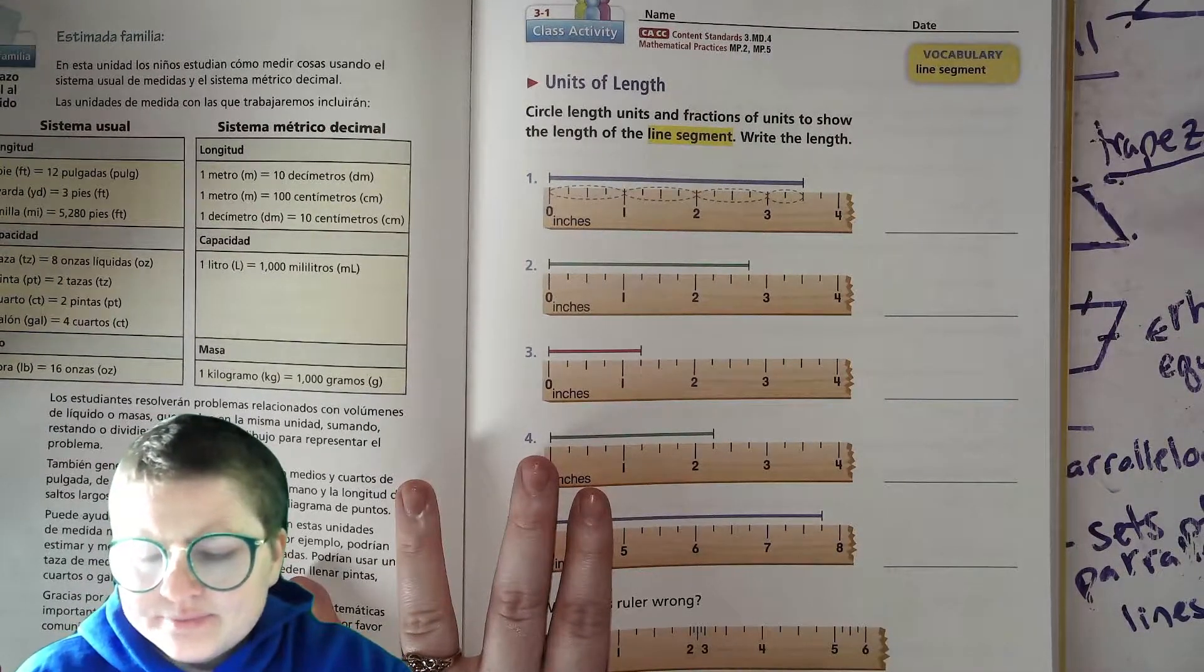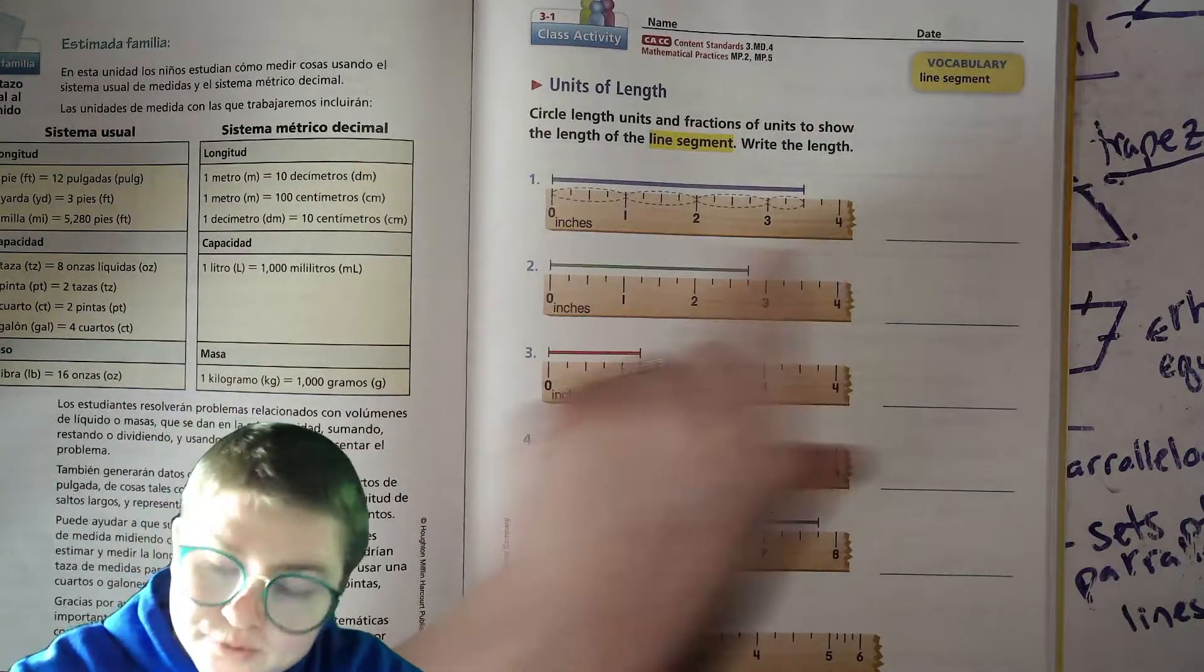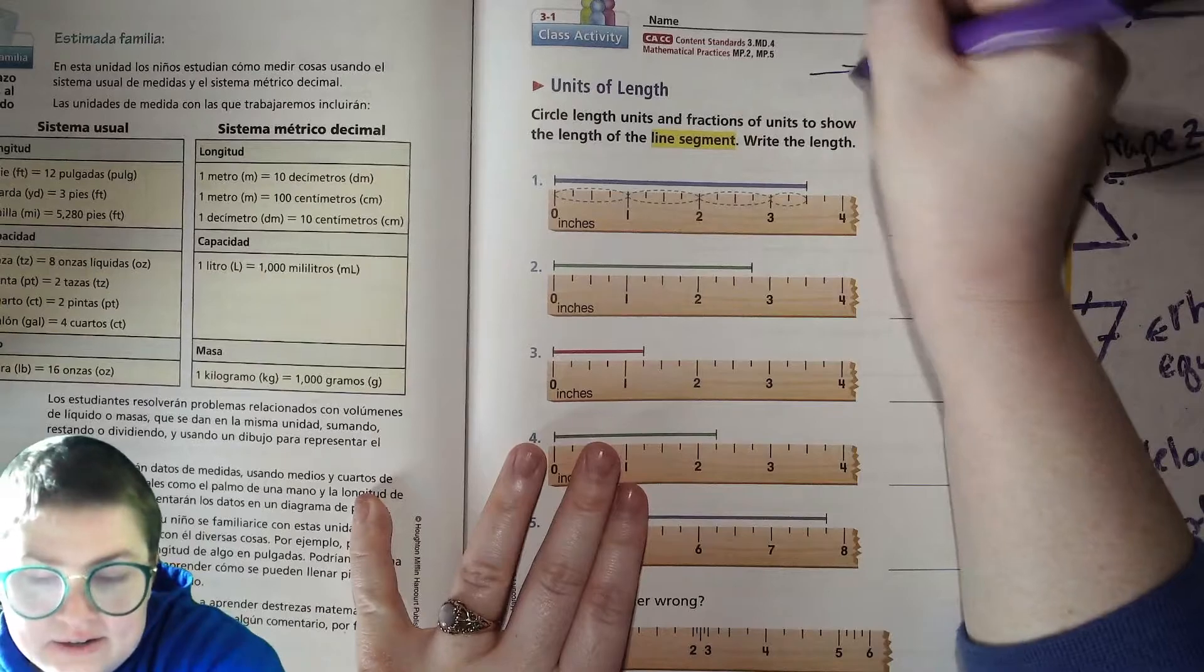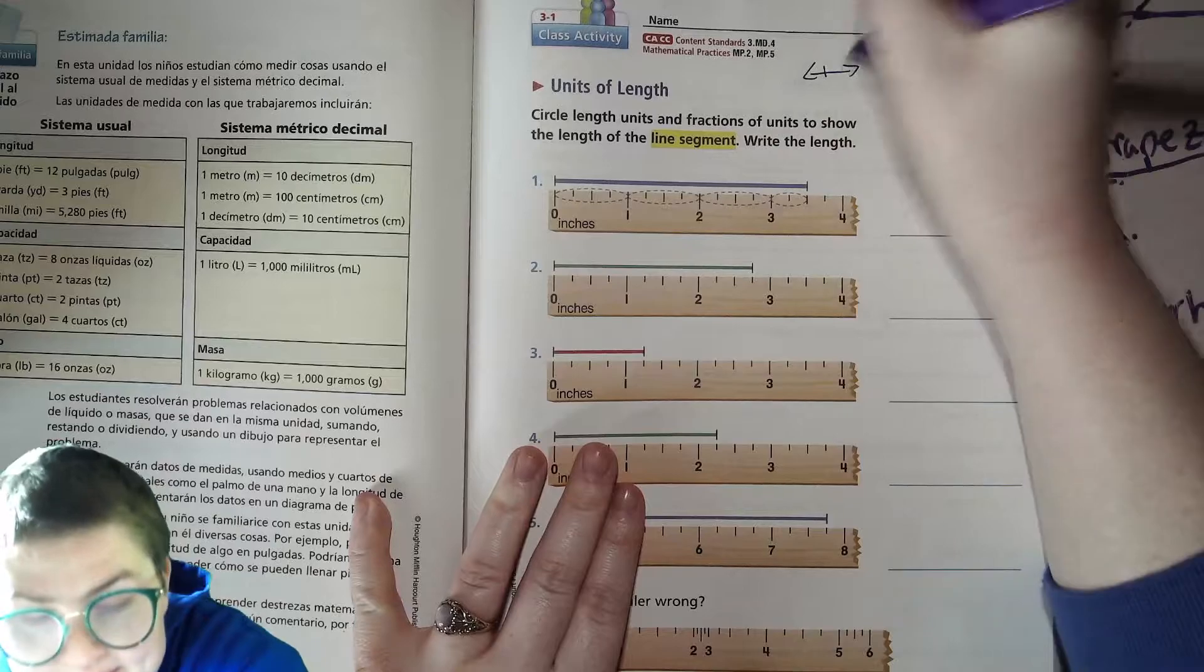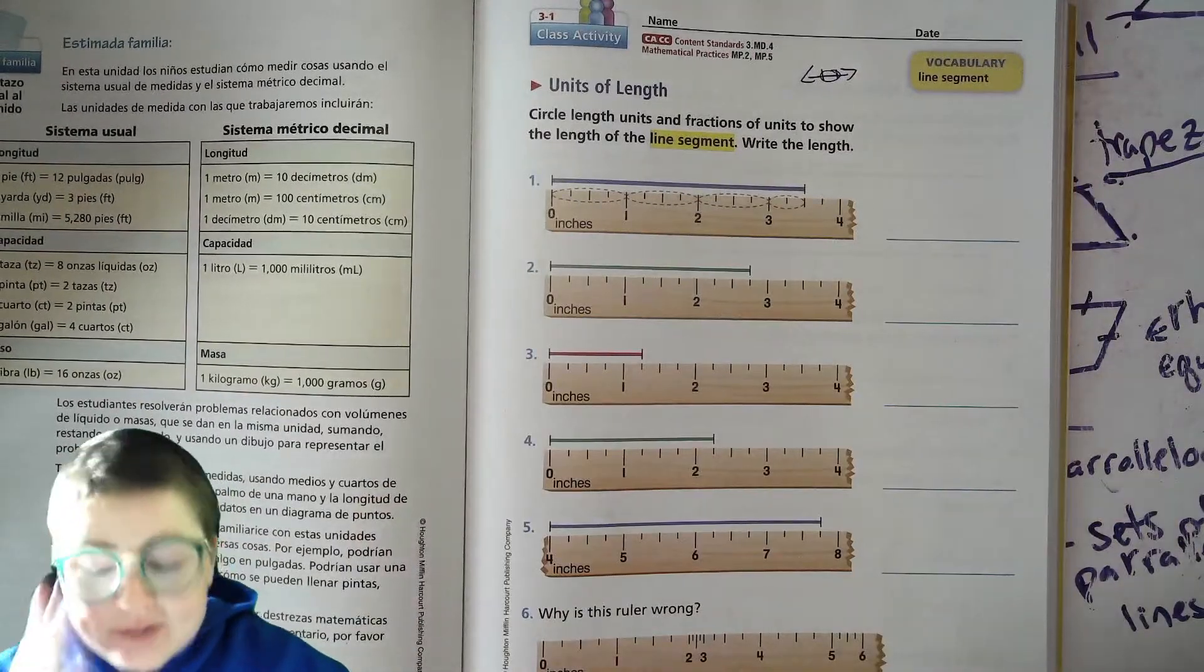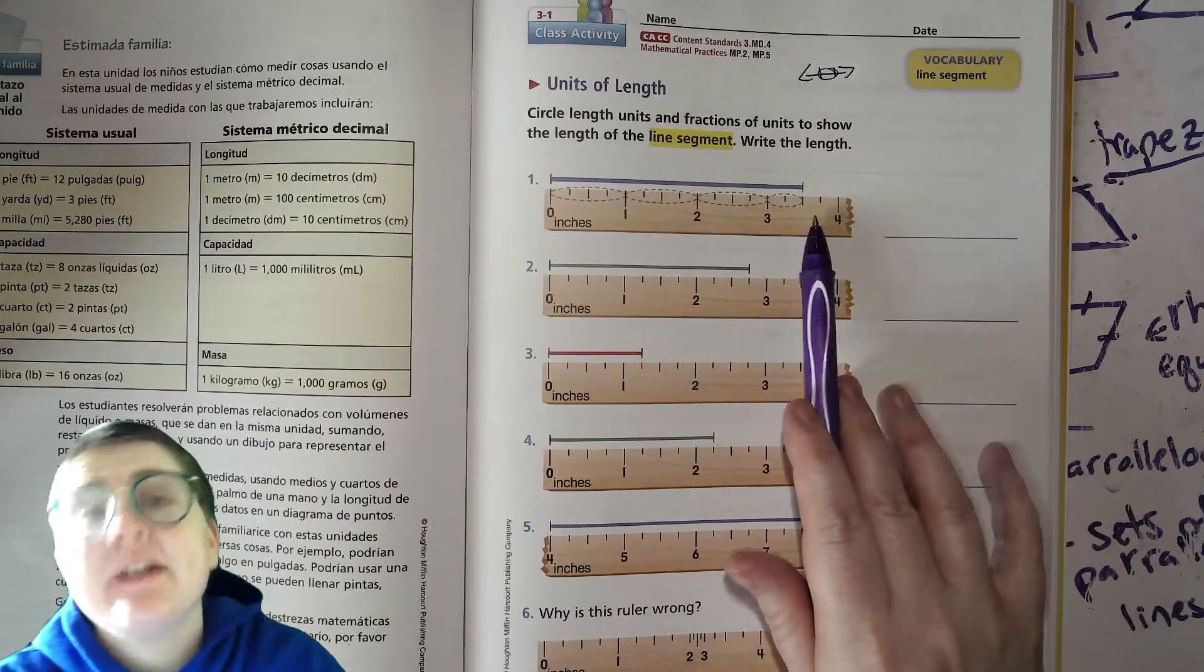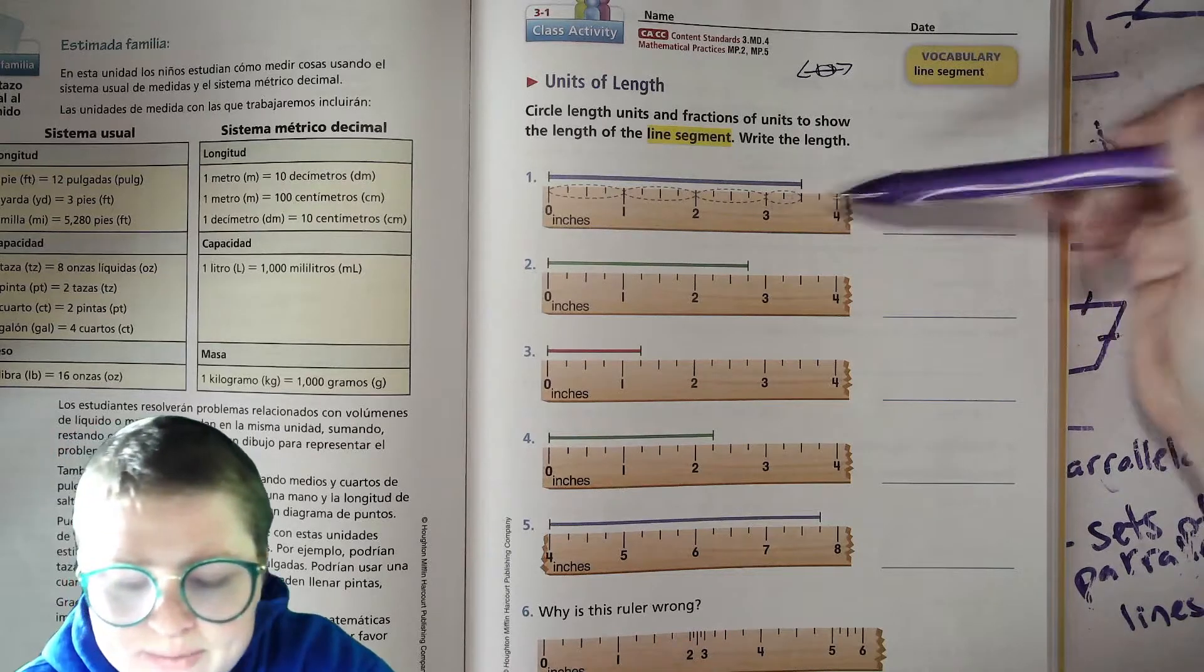Okay, so we're just gonna do this first page here. It has units of length. So we're pretending that we have this ruler here and we're measuring this line segment. The line segment, technically a line goes on forever in both directions. And then when you have a piece like this, you're looking at just this chunk, so it's a piece, a segment of a line.